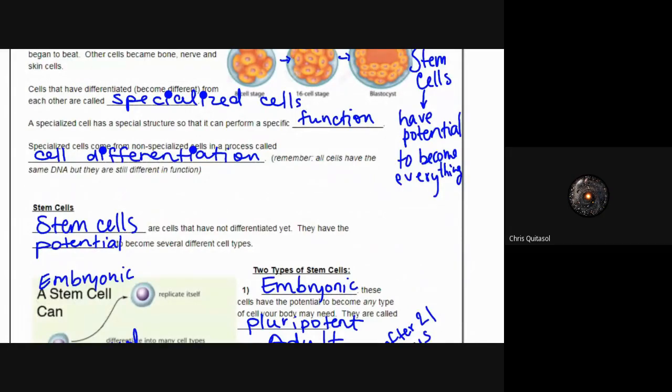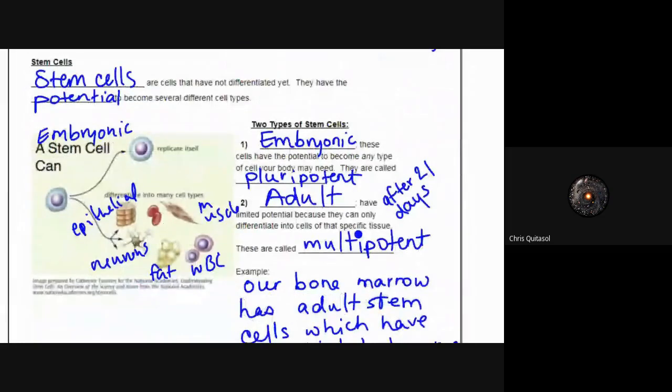How does that happen? Well, there are things called stem cells. These cells have not differentiated yet and have the potential to become several different cell types. These embryonic stem cells are pluripotent and can become many different types of cells.